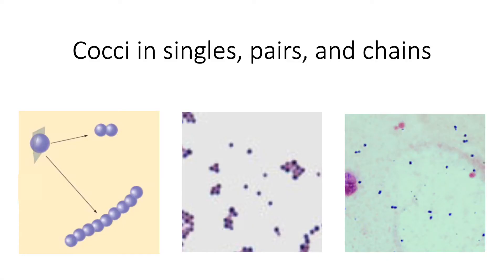Let's take a closer look at the arrangement of our cocci. Here we have cocci in singles, pairs, and chains. Singles are simply individual cocci that you will be able to see under the microscope. Your pairs are two cells or two cocci that are very close together. Here is an example of a single cocci — that's the middle figure here.